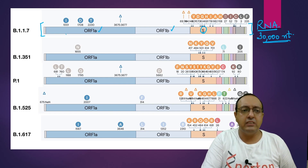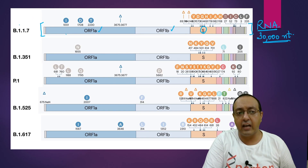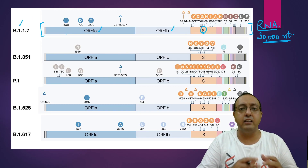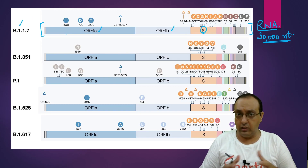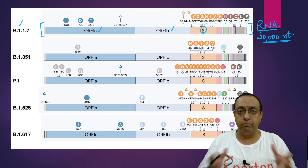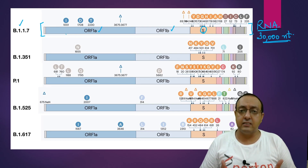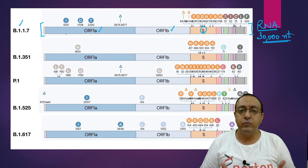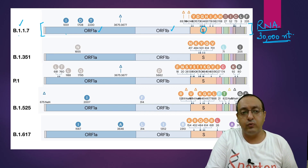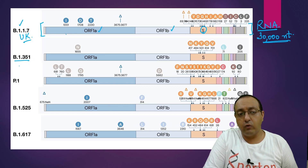These are the different variant forms that have been identified. These are variants of concern, labeled as potentially very dangerous, and scientists are tracking them intensively. B.1.1.7 was first isolated in the UK, and B.1.351 was first isolated in South Africa.